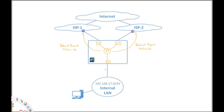By default all traffic would be sent out of ISP1, and only if that route goes down would traffic route over to ISP2. The problem is that the route only goes down if the interface goes down. In most environments you'd have an internet switch, so only if that switch goes down does the interface go down. If the ISP's router or circuit is down, the interface stays up and nothing fails over — so that's not a good implementation.